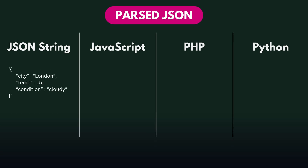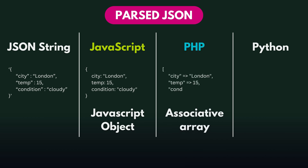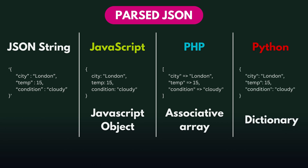The app can then extract this information from the JSON string, but first it needs to parse it. This just means changing the JSON string into something that the language can read. So if you're using JavaScript and you parse the JSON string, you'll be left with a JavaScript object. But in PHP it would convert it into an associative array, and in Python it would convert it into a dictionary.